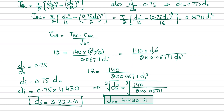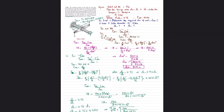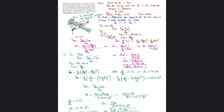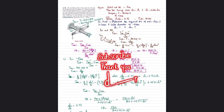So the inner diameter is 3.322 inches and the outer diameter is 4.430 inches for the tube. That was all about problem 5-28. I hope you enjoyed this video. If you're new to my channel, subscribe and press the bell icon to get notifications about my latest videos. If you have any questions, ask in the comment section. Thank you for watching.